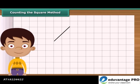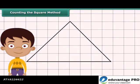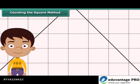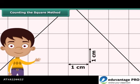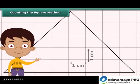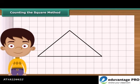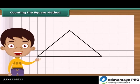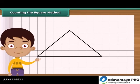Draw the triangle on the squared paper. Each square has a side of one centimeter. First, count the complete squares enclosed by the triangle. Mark each of these squares as A.